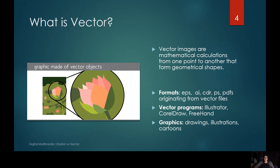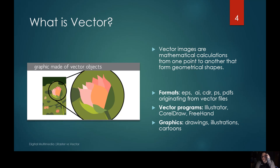What is a vector? A vector image is based on a mathematical calculation instead of pixels. Popular formats for vector include EPSs, AIs, and some PDFs. You're going to use vectors in programs like Illustrator, CorelDRAW, and Freehand. Vectors are used to create drawings, illustrations, and cartoons.